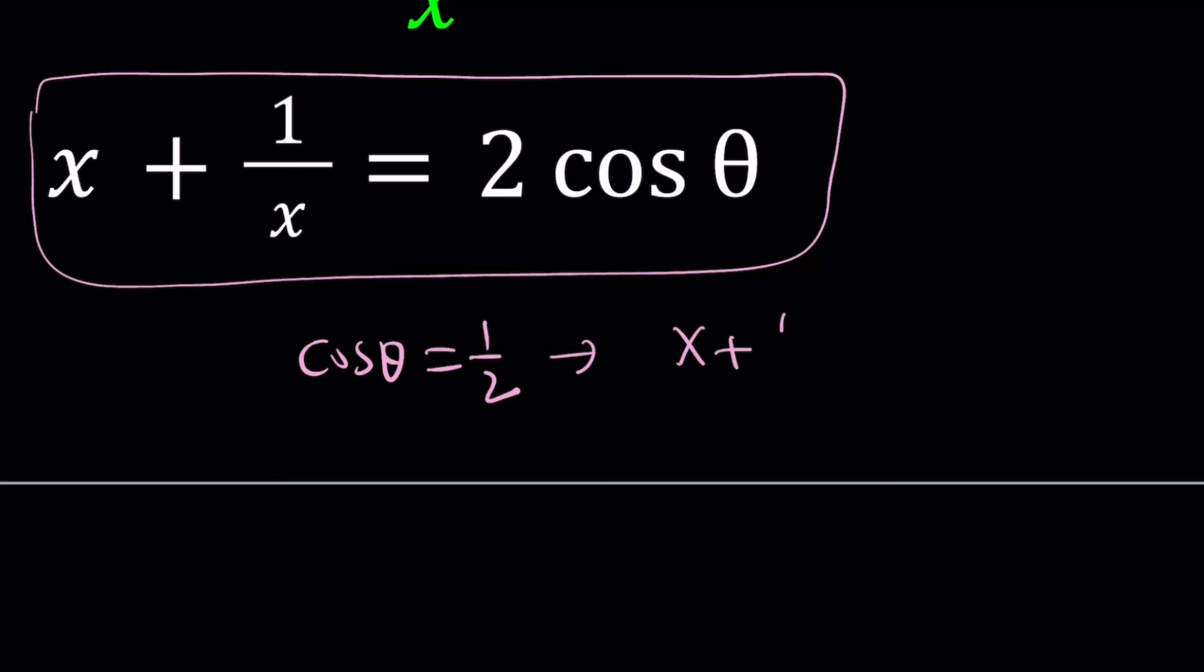From here, you can basically get a different problem like x plus 1 over x is equal to 1. And then find x cubed plus 1 over x cubed. Or if you set cosine theta equal to root 3 over 2, then this is going to equal to root 3, so on and so forth. You see, you can generate so many different problems from this problem. Even set it equal to 0 and see what happens. Because that's going to be pretty interesting.